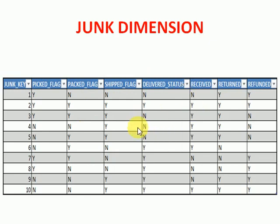Junk Dimension means this is Junk data — we can use it, but when you look at this data it appears to be junk because the data contains only true or false, or Y and N. That is the reason we call it a Junk Dimension. If you have a huge dimension table with columns that are frequently getting changed — what we mainly call rapidly changing dimensions — this concept applies.